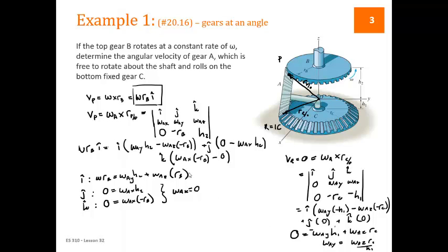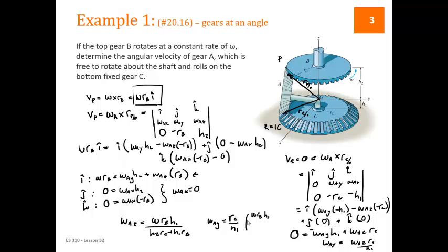Substituting omega_AY = omega_AZ·R_C / H1 into the first i-hat equation, we solve for omega_AZ = (omega·R_B·H1) / (H2·R_C + H1·R_B). Plugging back in for omega_AY gives omega_AY = R_C·omega·R_B / (H2·R_C + H1·R_B), with the H1 terms canceling. These two components — omega_AY and omega_AZ — are the final answer for omega_A.